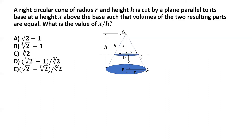We can now apply basic geometry. Considering triangles ADE and ABC, these are similar triangles because line DE is parallel to line BC. The line cuts two sides of the triangle and is parallel to the third side, so triangle ADE is similar to triangle ABC.